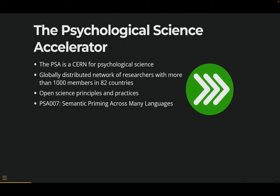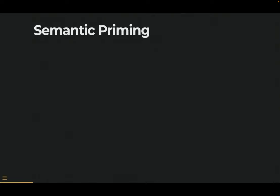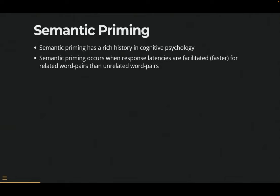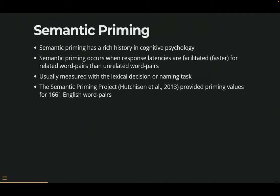What we're doing is looking at priming, which is why I'm here today. This is going to be a spoiler alert because it is the first set of results from the study — we're nowhere close to done. Semantic priming has a rich history in cognitive psychology. It occurs when response latencies are facilitated — made faster — for related word pairs in comparison to unrelated word pairs. It's usually measured with a lexical decision or naming task.